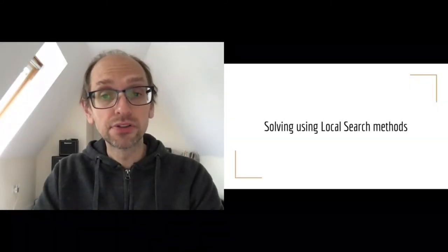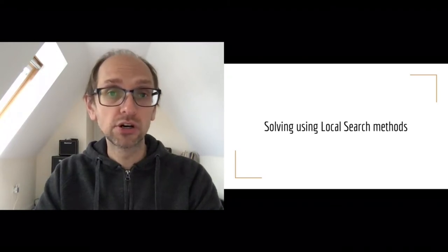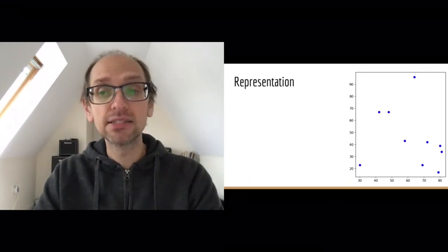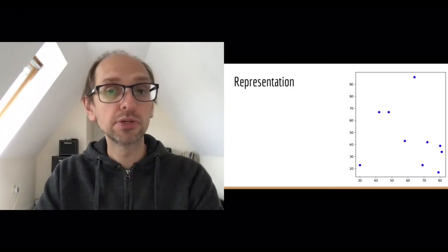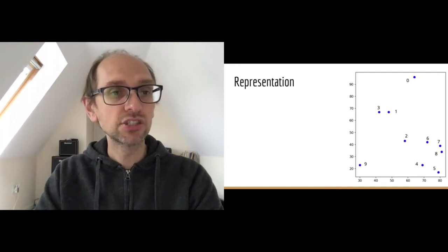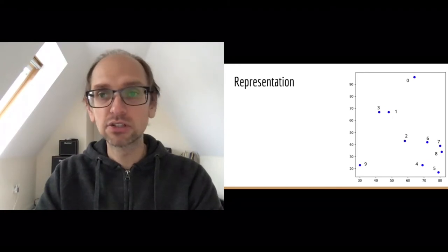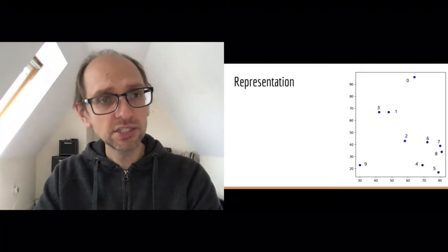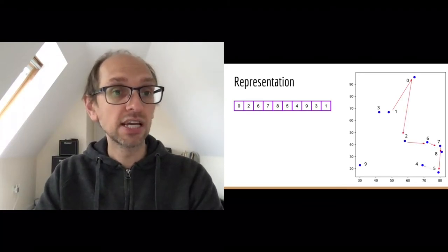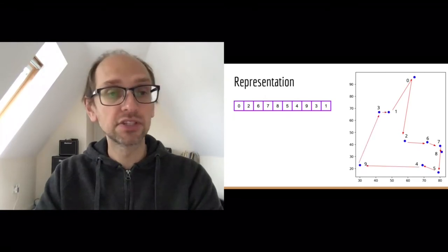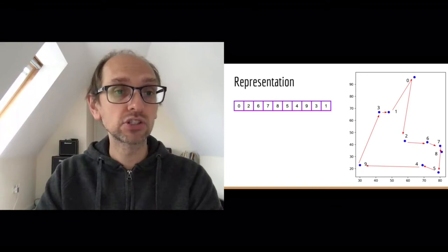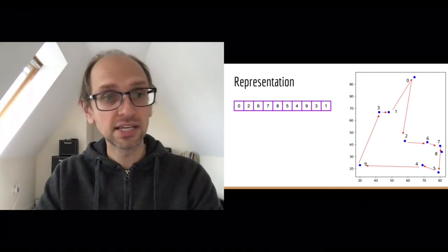Let's look at local search methods to solve these problems. First, we need to represent the problem so a computer algorithm can solve it. Taking a simple TSP example with ten cities labelled zero to nine, we represent this as an array or vector of integers, where each integer is a city index and the order represents the route. So here we're starting at city zero, going to two, then six, then seven, and so on.